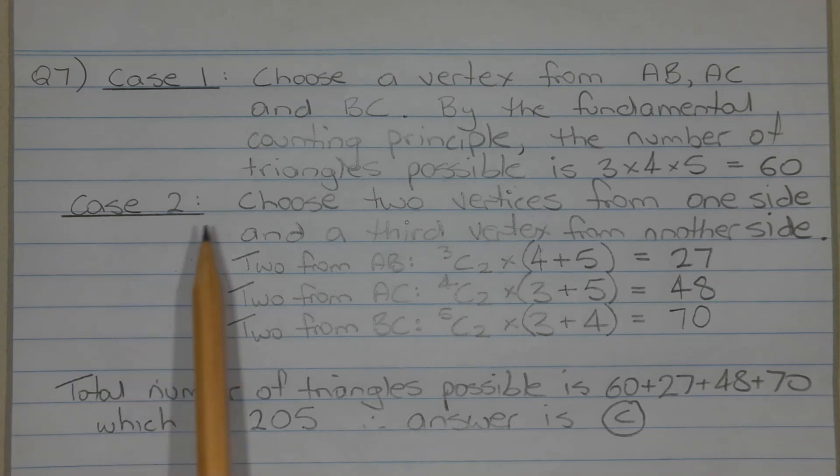In the second case, choose two vertices from one side and a third vertex from one of the other sides. So choosing two vertices from side AB and a vertex from either AC or BC, we have 3 choose 2 times 4 plus 5 in brackets, which equals 27.